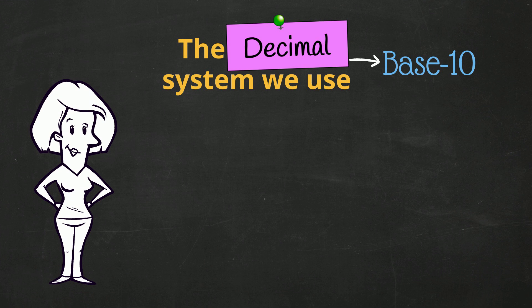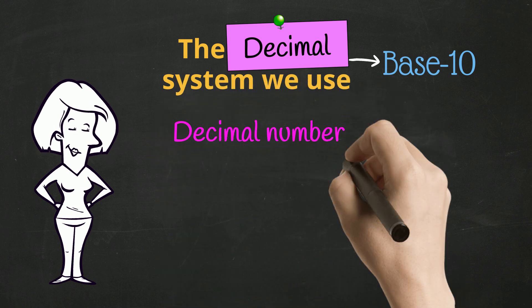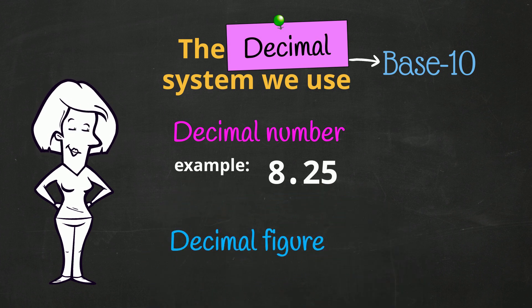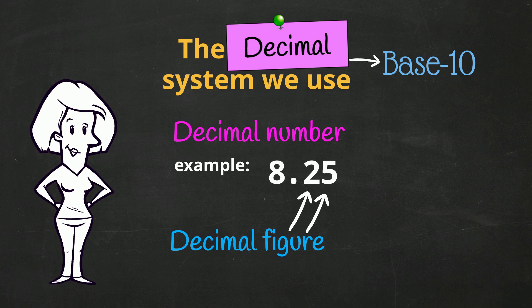But when we talk about a decimal number, we mean a number with a decimal point and some figures after it. A decimal figure is a digit that comes after the decimal point. This number has 2 decimal figures. OK!